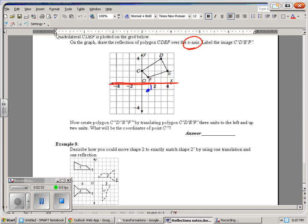F is 1 above, so F prime is 1 below. E is 2 above, so E prime is 2 below. D is 1, 2, 3, 4 above, so we go 1, 2, 3, 4 below the x-axis to make D prime. And then finally, C is 2 above, so C prime is 2 below. Shape is congruent.